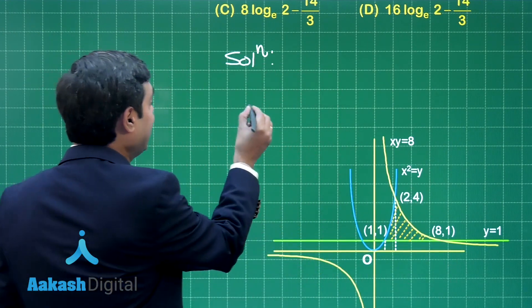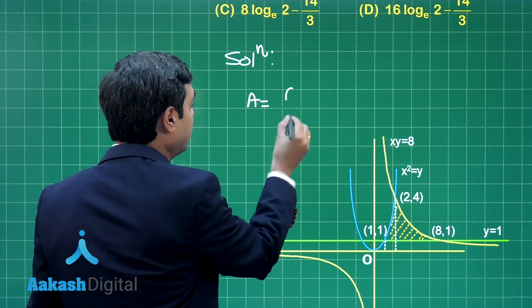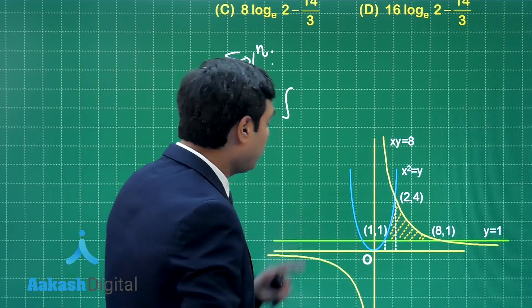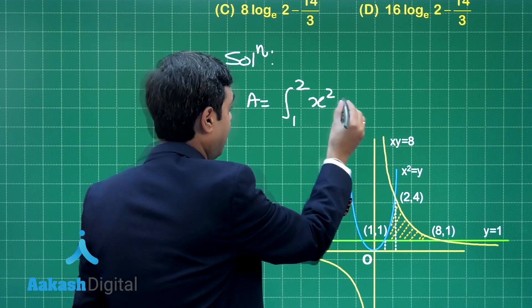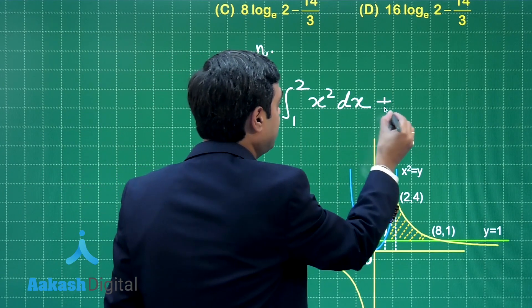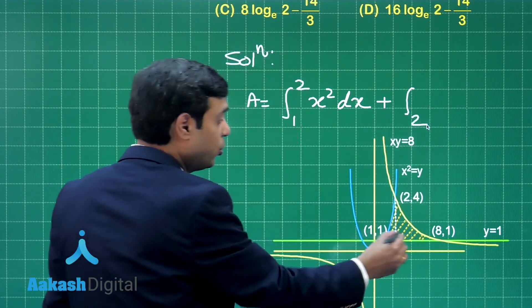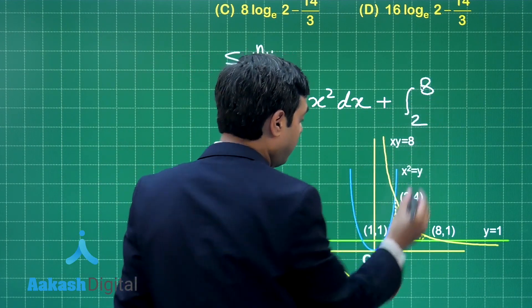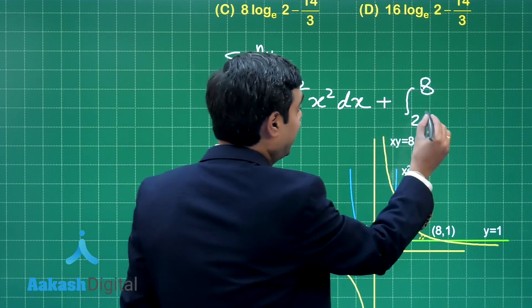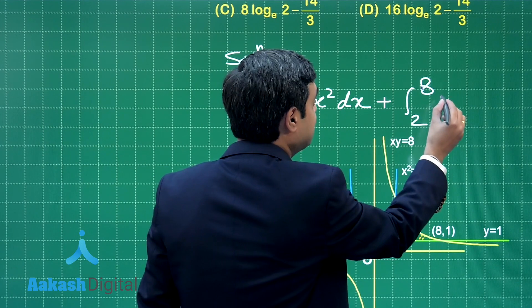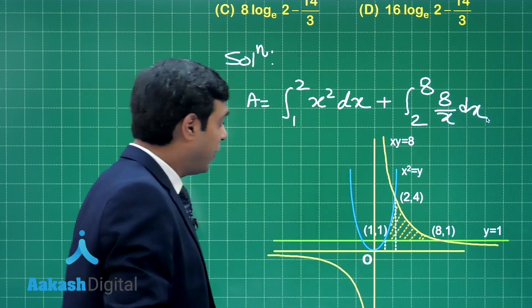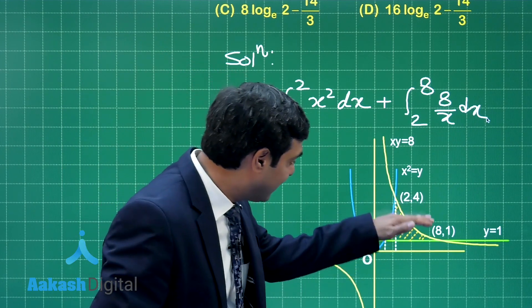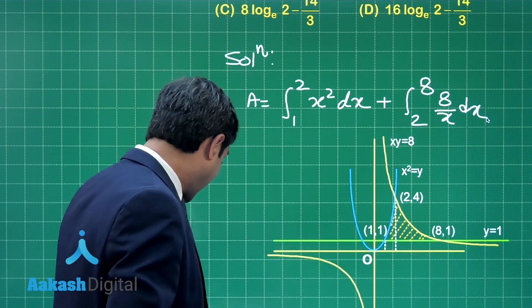So, the required area we can say is equal to integral 1 to 2 for parabola that is y equals x square dx plus 2 to 8 for this hyperbola that is y equals 8 by x dx. Correct. Now, when you talk about these two, you have taken this entire one. Now, what else you need?